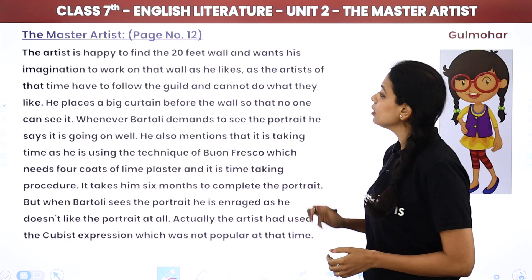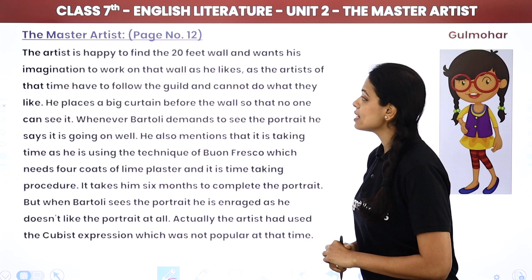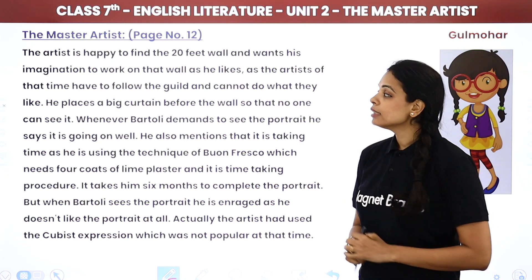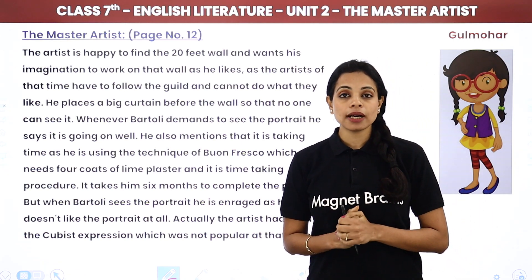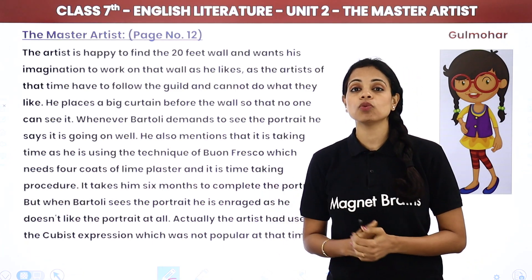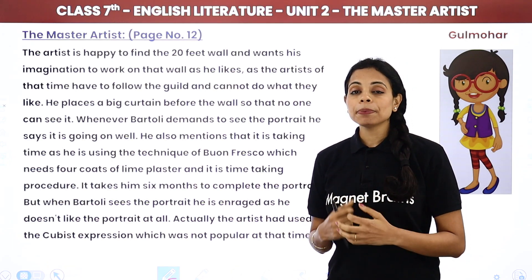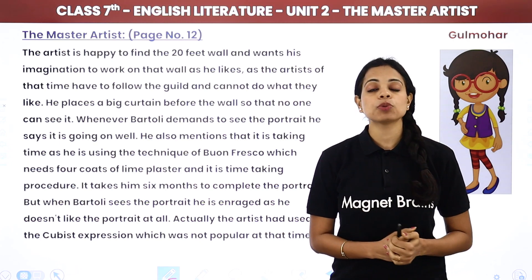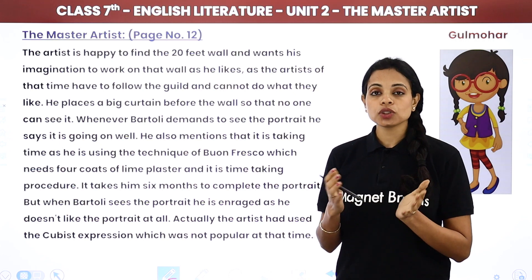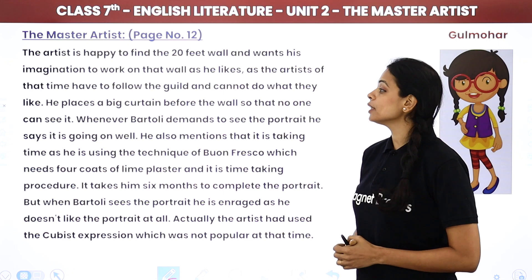The artist is happy to find a 20-foot wall and wants his imagination to work on that wall, because artists of that time had to follow the guild and could not do what they liked. Here, the artist is very happy because he has an extremely big space where he can create whatever he wants — his creativity and imagination — which was not allowed under the guild or union at that time. He places a big curtain before the wall so that no one can see it.